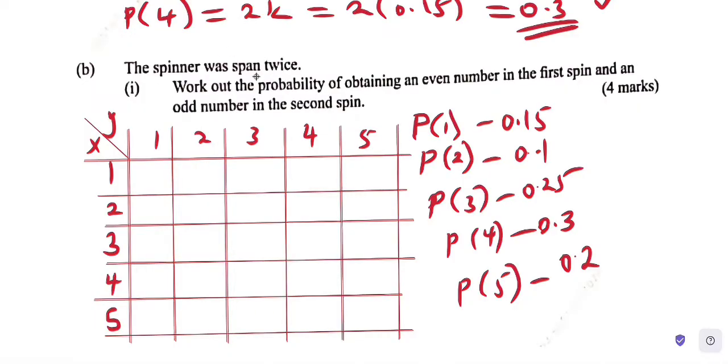Part (b): The spinner was spun twice. Work out the probability of obtaining an even number in the first spin and an odd number in the second spin. So we must fill in a table here to see how it works. x is your first spin, y is your second spin. I'll write 1,1 then 1,2 and so on.